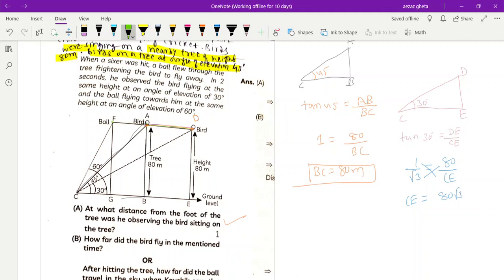But we don't want CE, we want just BE. In CE we have CB plus BE is equal to 80 root 3. CB is 80. So BE is equal to 80 root 3 minus 80, 80 common, root 3 minus 1. This is the distance the bird traveled. Two mark question, it's not difficult, easy one.